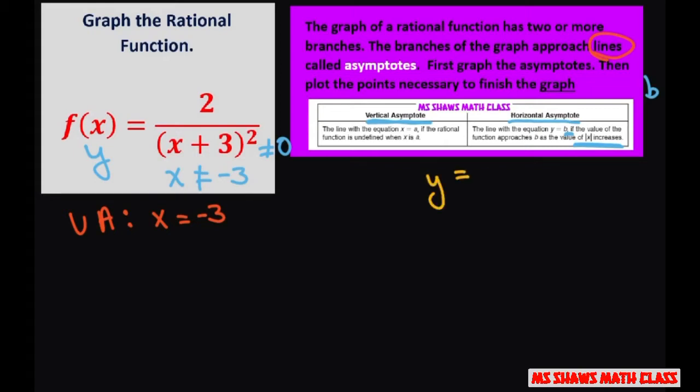let's say I put in 10 for x. That's not too big, but we're squaring it. That would be 13 squared. That's 2 divided by 169. That's very close to zero.